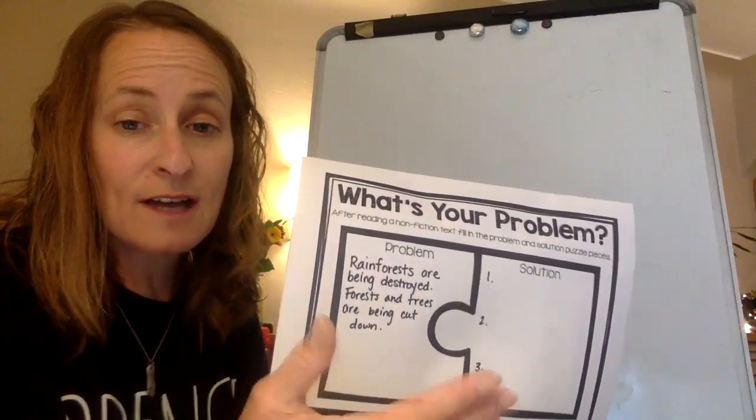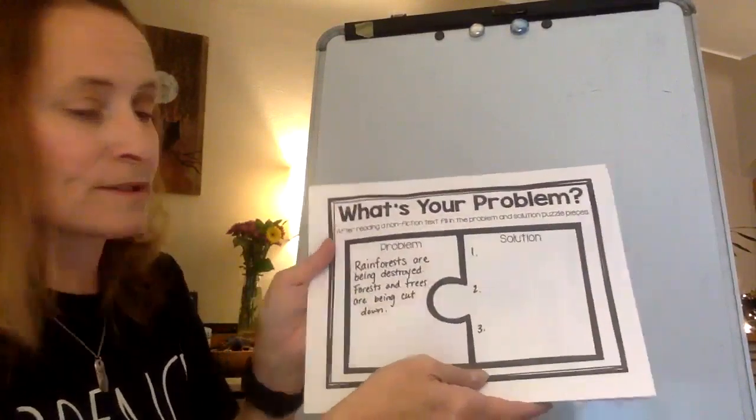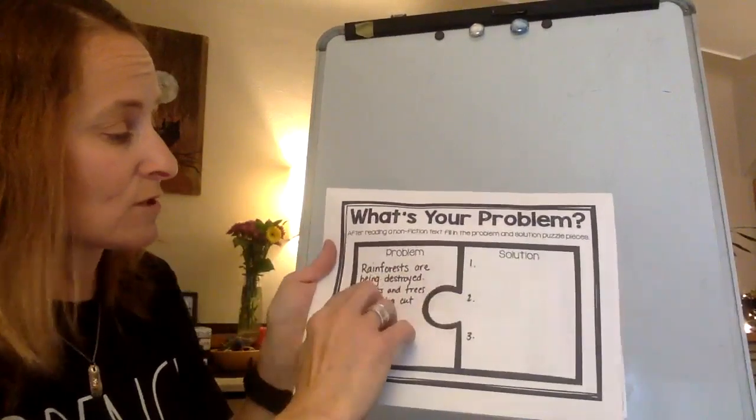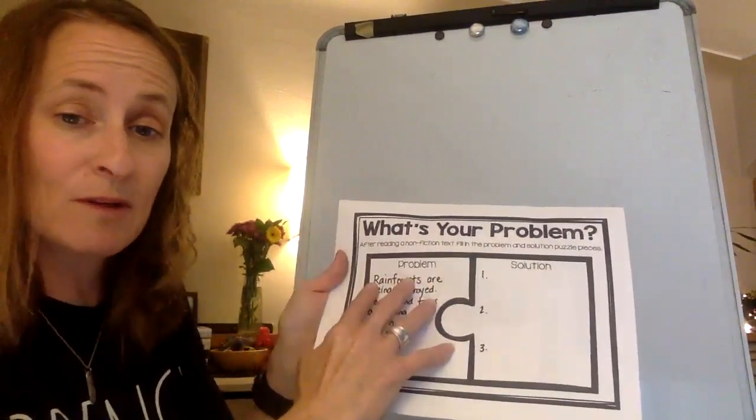It says 'What's Your Problem?' After reading the nonfiction text, fill in the problem and solution puzzle pieces. Really, the whole problem in the article is rainforests are being destroyed, forests and trees are being cut down. That's your problem.